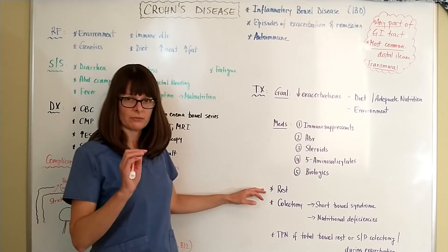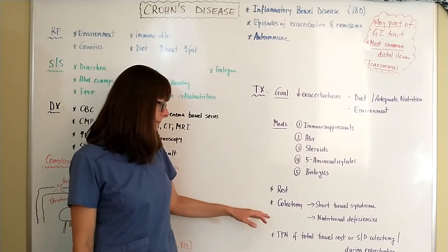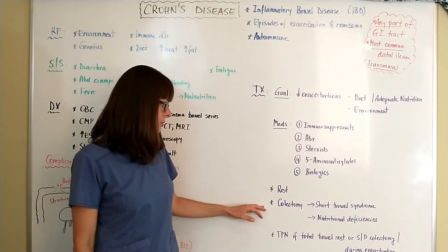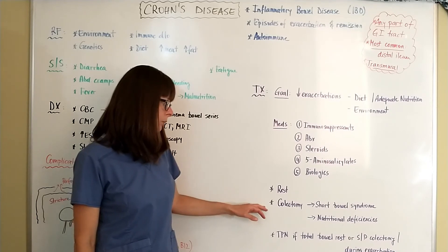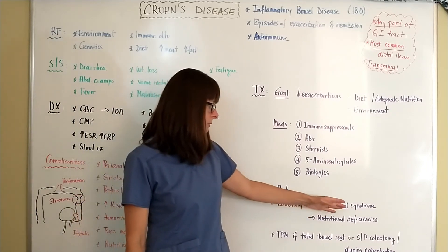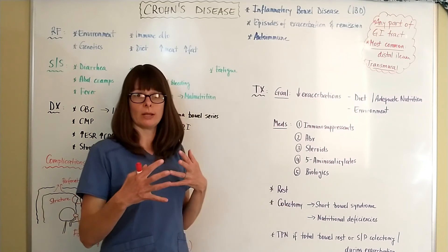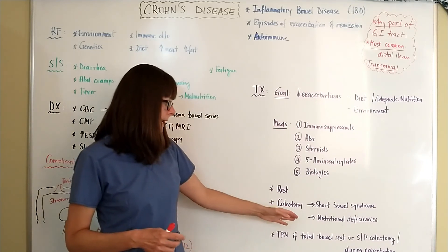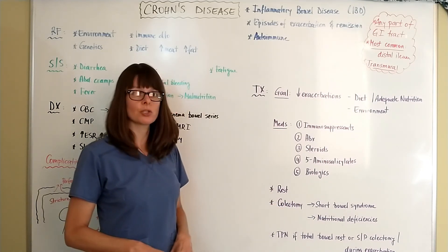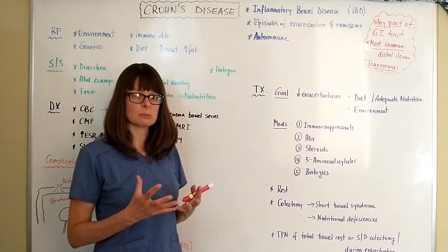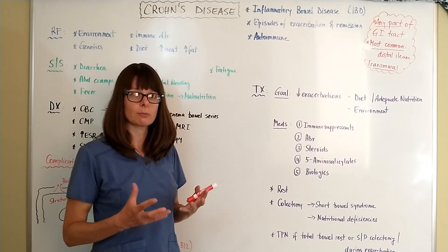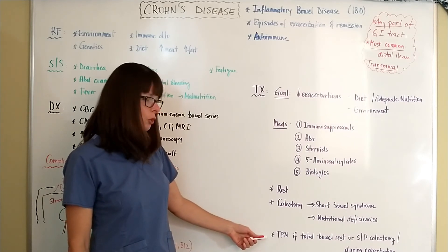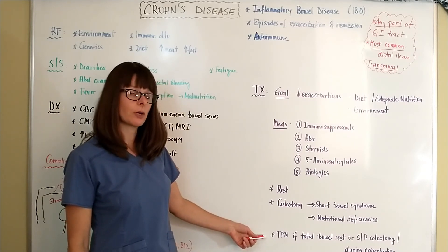When there are repeated episodes or major exacerbations with transmural involvement, the patient may need a colectomy — partial removal of the colon. This results in short bowel syndrome because the bowel has been shortened, and nutritional deficiencies become a further concern since there is less bowel available to absorb nutrients. Many times patients will need total parenteral nutrition.